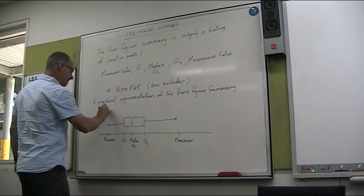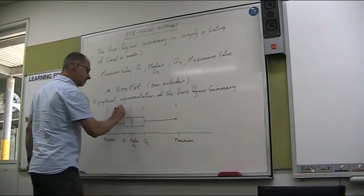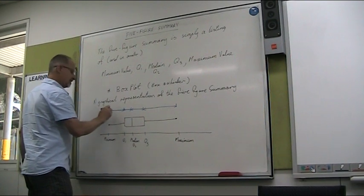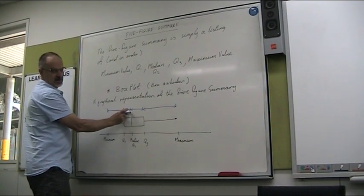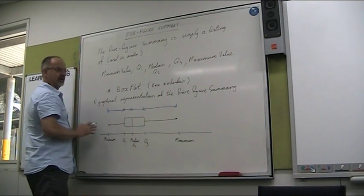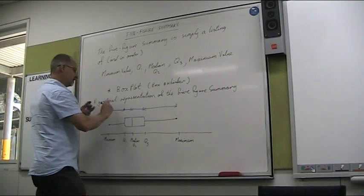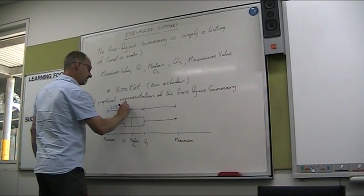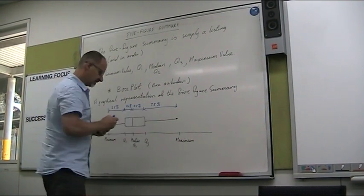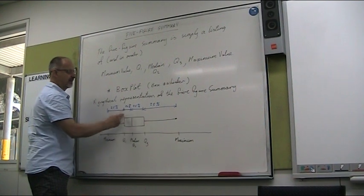Now, each of these sections that we've got here represents 25% of all the data. So where it's only small means it's bunched up closer. Where it's longer, it means that data's spread out. So if there was, say, 100 pieces of data altogether, 25 of them would be in each of those sections. So 25%, 25%. And then of course, if that's 25%, then in that box is 50 altogether.